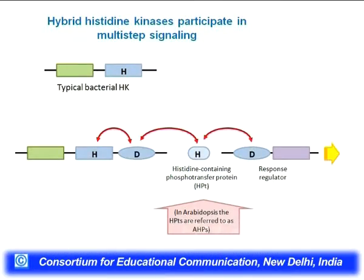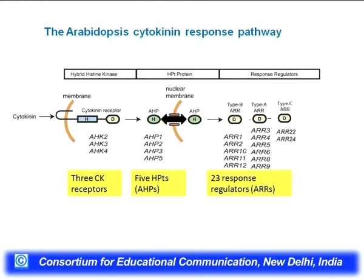This is how cytokinin signaling is slightly different from other hormones. The two-component kinase system is used, and the difference between the bacterial and plant systems is that in plants the signal has to pass another membrane — the nuclear membrane. So in plants there is an intermediate called a histidine phosphotransfer protein (HP). The first receptor phosphorylates the HP, which is more diffusible, can cross the nuclear membrane, and then activates what are called response regulators. In Arabidopsis, at least 3 receptors, at least 5 histidine phosphotransfer proteins, and 23 response regulators have been identified.